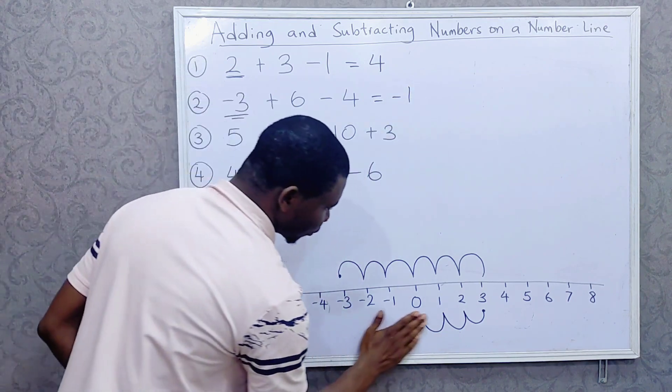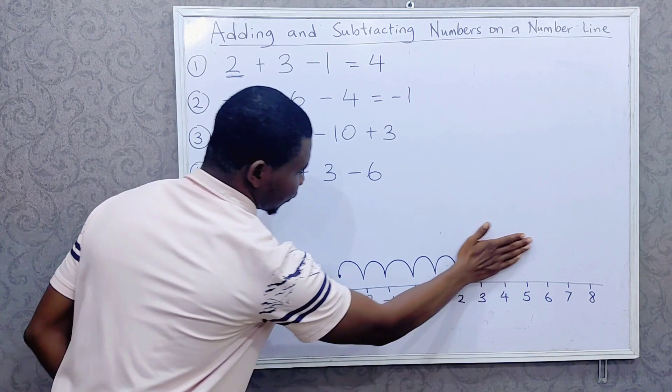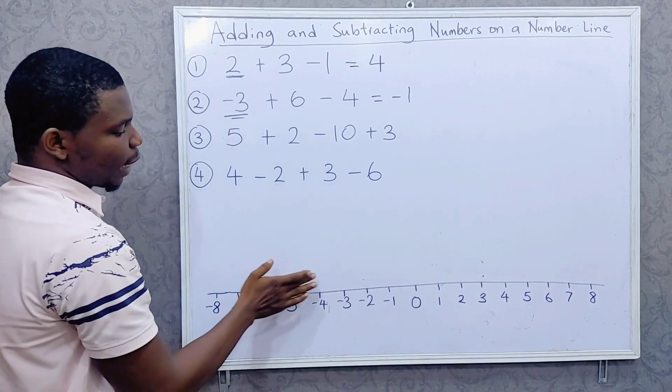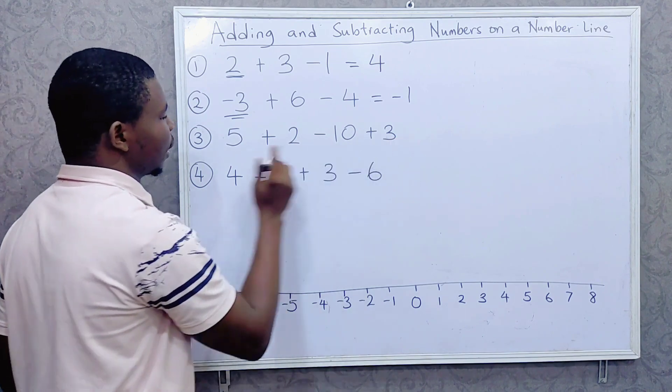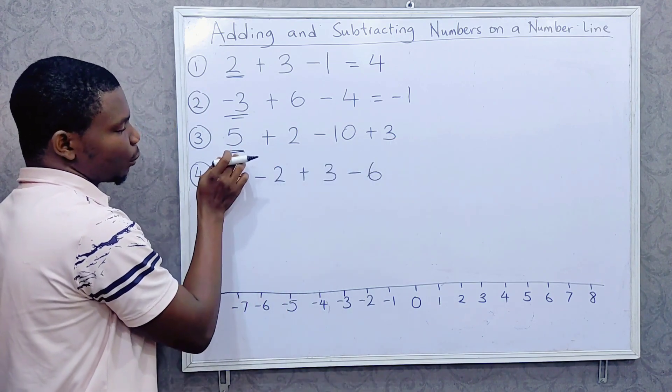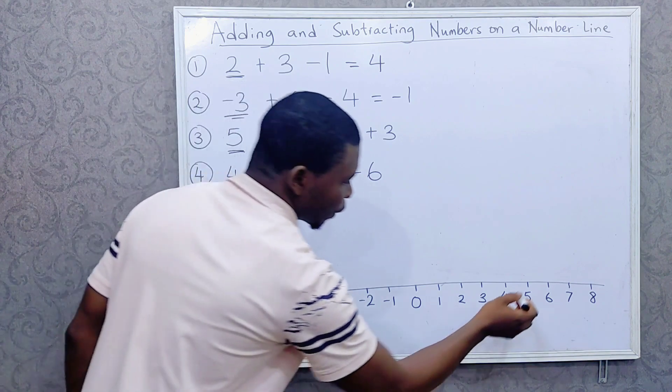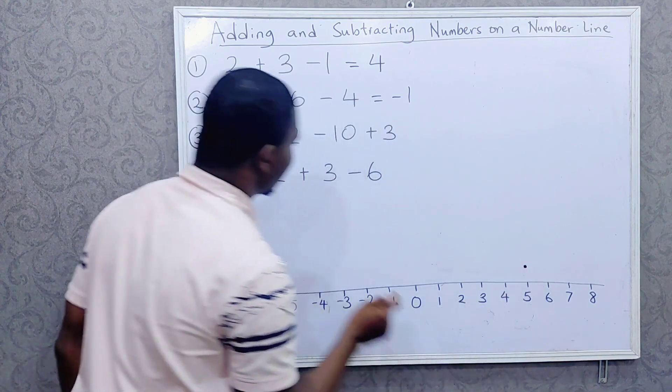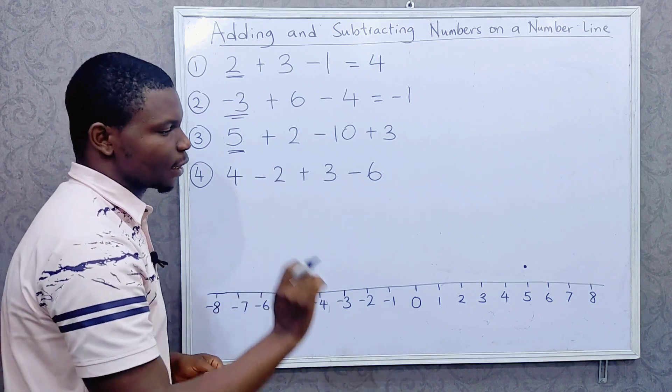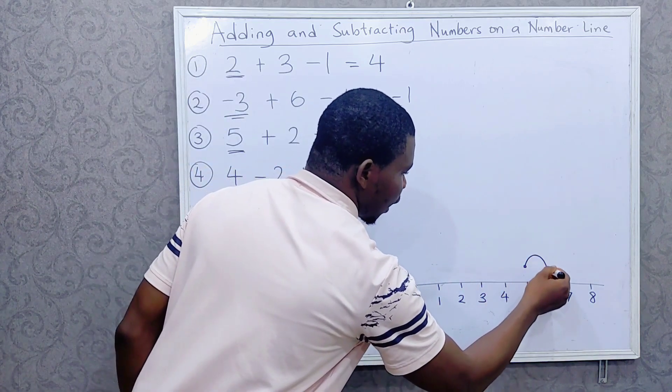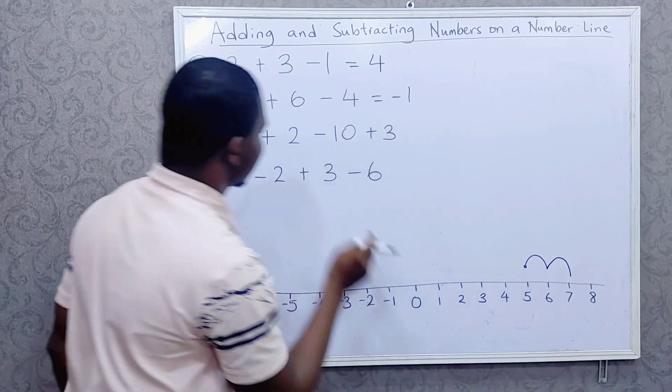Now the third one: 5 plus 2 minus 10 plus 3. So we start from 5, we locate 5, and this is it here. Then plus 2, we are going forward, we are going to the right 2 times: 1, 2. Then minus 10, we go backward. How many times?